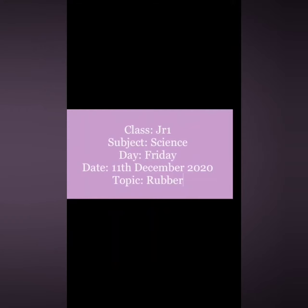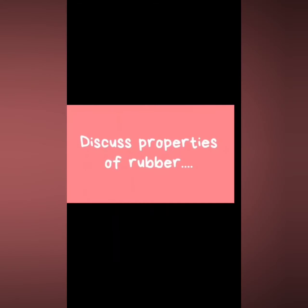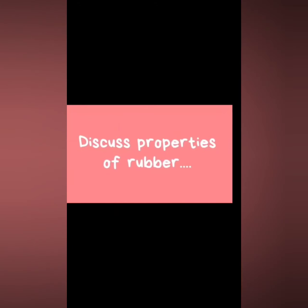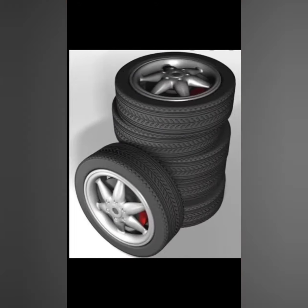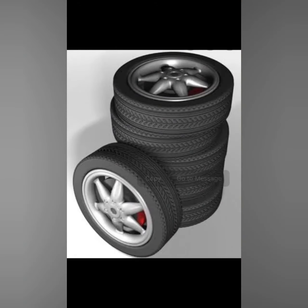Our topic is rubber. This week we studied about different materials — we studied about fabrics and papers, things made of fabrics, things made of paper. Today we will discuss the properties of rubber. There are different things made up of rubber.